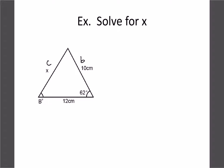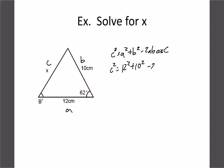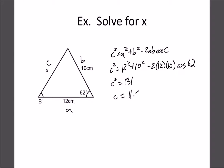So with a = 12, b = 10, and angle C = 62°, we have c² = 12² + 10² − 2(12)(10)·cos 62°. Typing that into the calculator gives 131, but remember that's c², so we square root it. c works out to about 11.5. That makes sense — the other two sides were 10 and 12, so 11.5 is a reasonable answer.